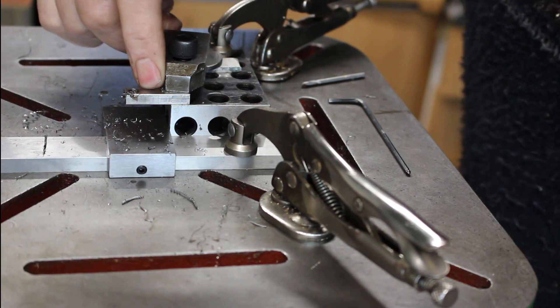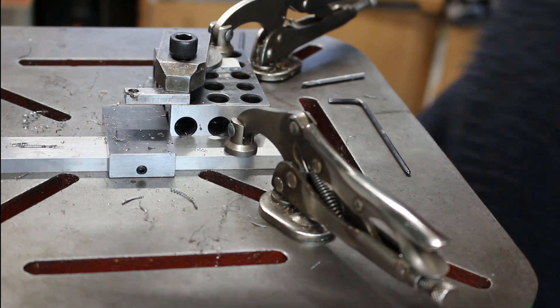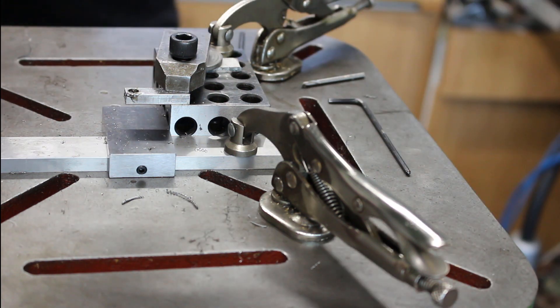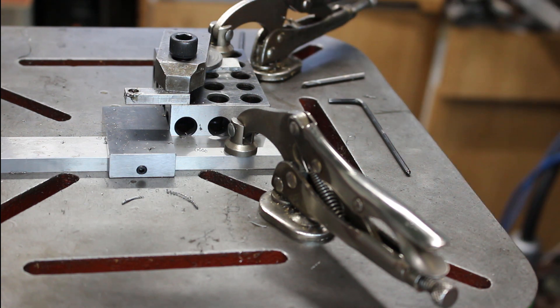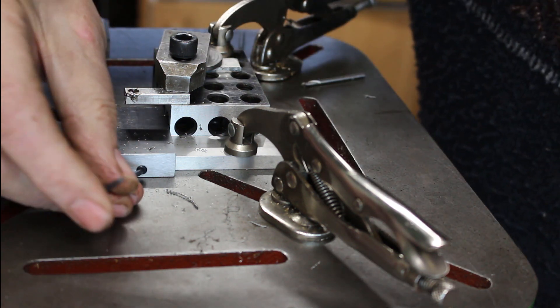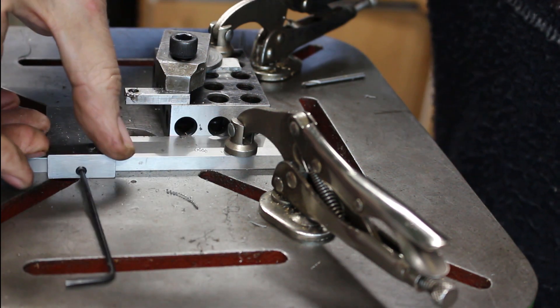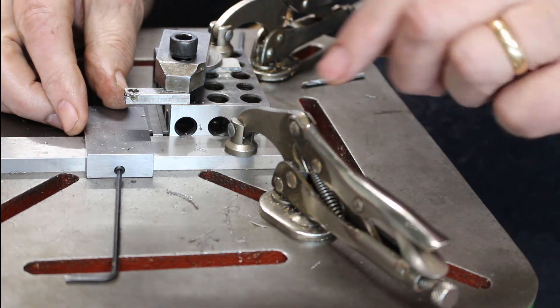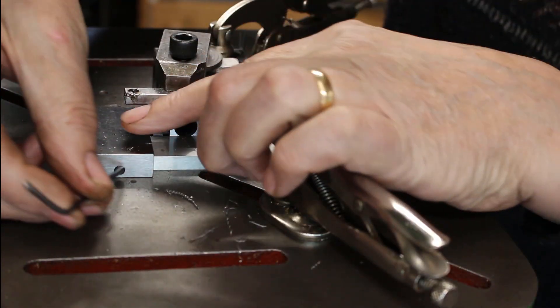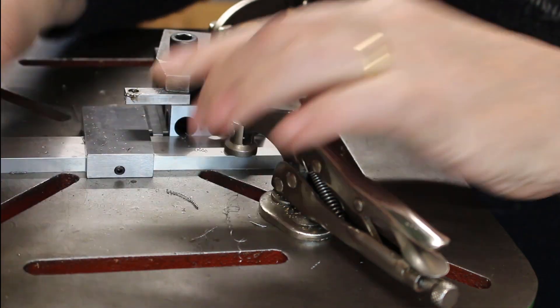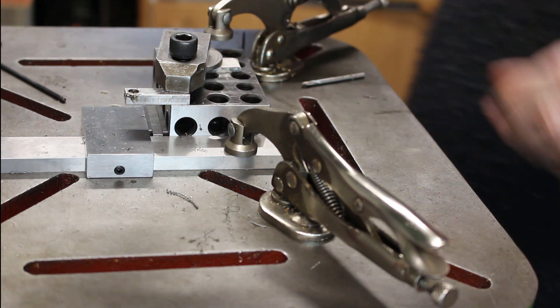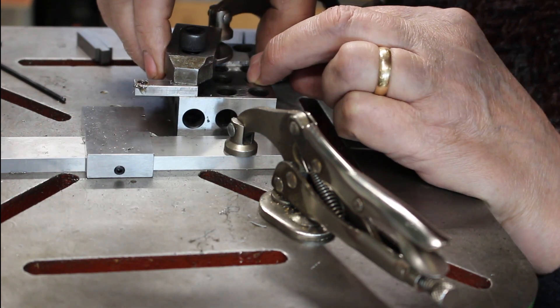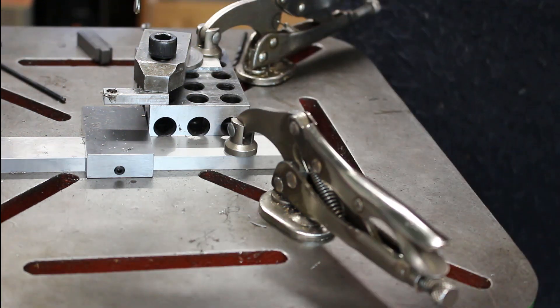The next hole is 10.5 millimeters in, so I've made up a spacer block using slip gauges. There we go, spot drill again.